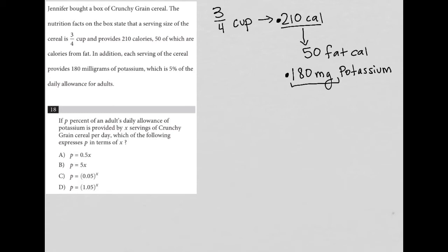So this 180 milligrams is 5% of the daily allowance for adults. So question 18 asks us, if P% of an adult's daily allowance of potassium is provided by X servings of crunchy grain cereal per day. So I'm going to stop right there because I need to translate this. A translate word problem strategy is what I'm going to use here. So I need to convert these words into an equation.